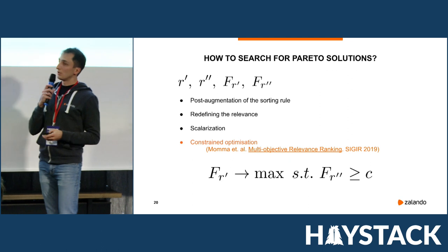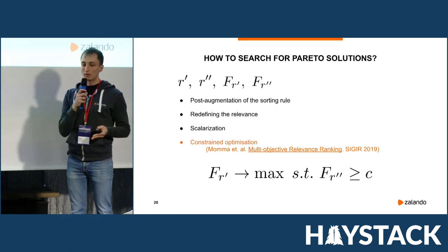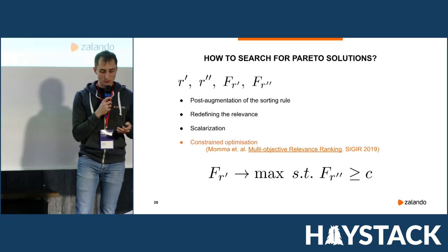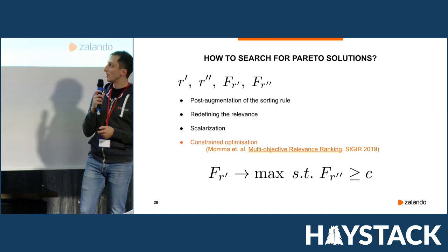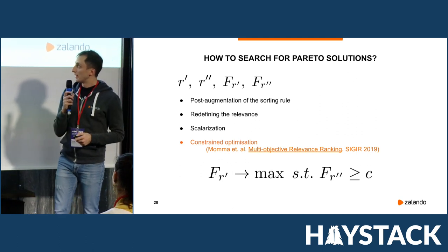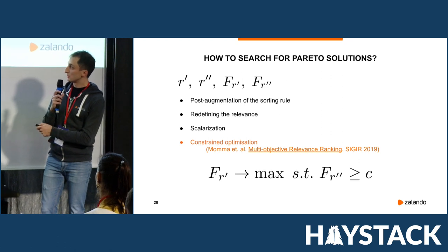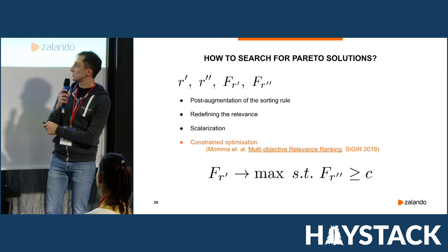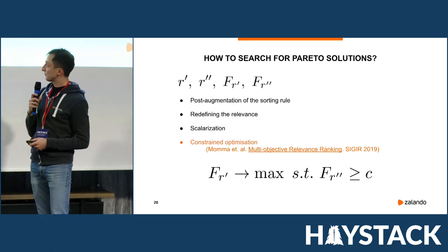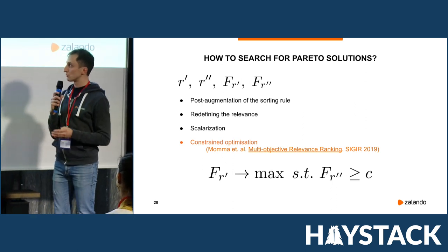In such situations we can also use a constrained learning to rank method. Constrained learning to rank is an area of active research at the moment — if you're interested, I would refer you to a recent paper. Constrained learning to rank amounts to taking one of the objectives and maximizing it subject to certain constraints on the other. We didn't use this approach in our experiments.